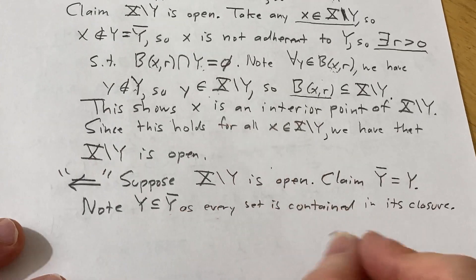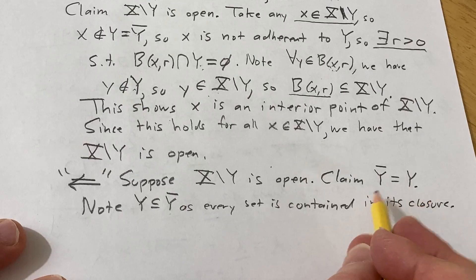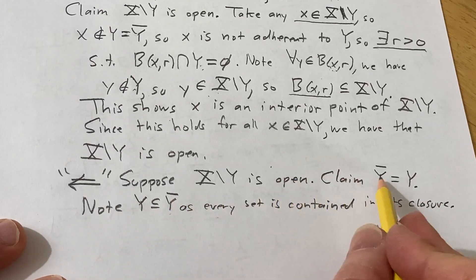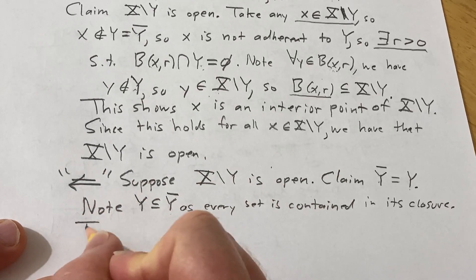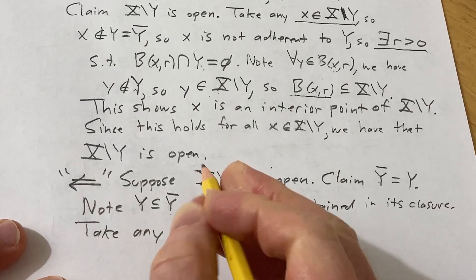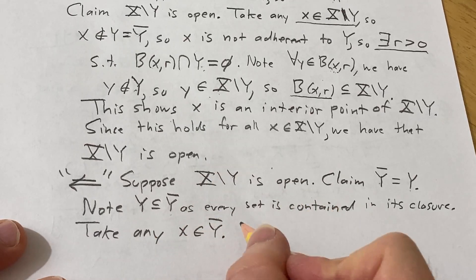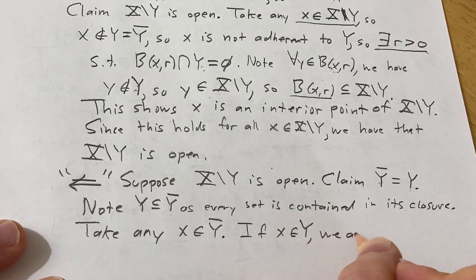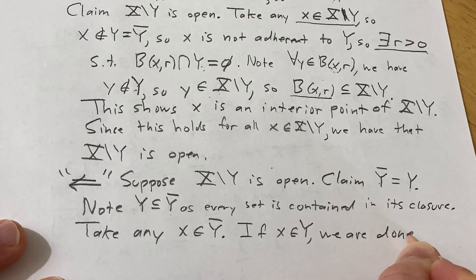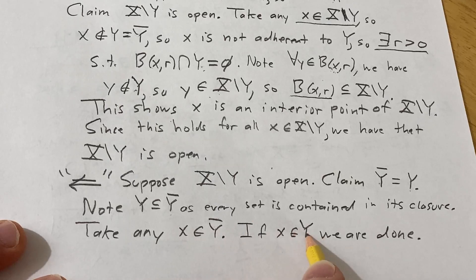Note that Y is always contained in its closure, as every set is contained in its closure — that's easy to show and almost immediate. So we just need to show the other inclusion: that every element in the closure is also in Y. Take any X in the closure. If X is already in Y, we are done — we have the closure contained in Y, so by double inclusion they are equal and Y is closed.